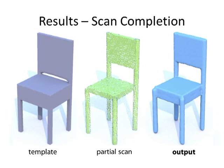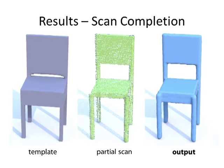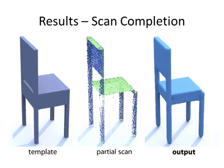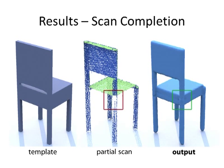This is an example of a scanned chair model. The scan lacks large portions of the legs and back, which are correctly reconstructed using our method by leveraging the template's self-similarity transformations.